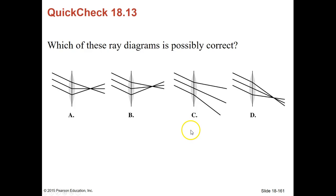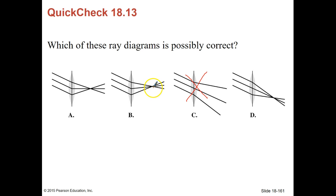They want to know which of these rays is possibly correct. After thinking and looking at the different ray tracing, we know one option can't be right because it's diverging. Another isn't right because the rays are coming in forming a focal point higher than where the bottom ray is, and that can't happen. Option A can't happen either, so the answer has to be letter D — you see that focal point down here.